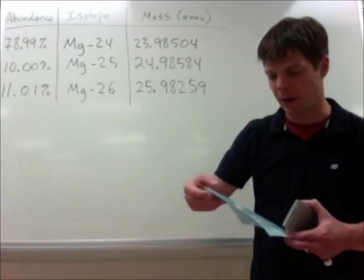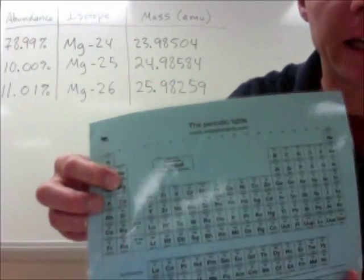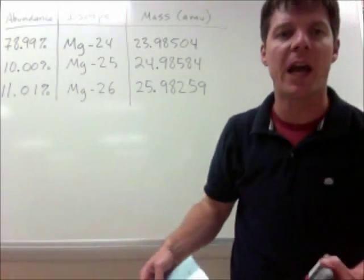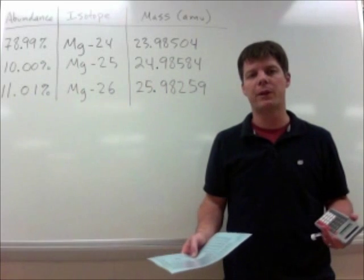First, let's go ahead and find magnesium on the periodic table. You're going to see that it is found right here. It is an alkaline earth metal which has an average atomic mass of 24.305.